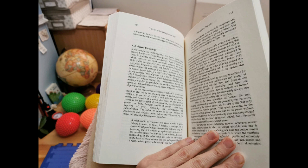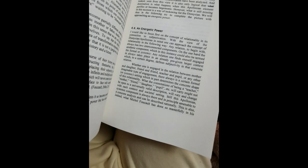Indeed seen from this view, it is also only logical that domination is what happens when this Apollonian element purifies or becomes hegemonic. However, what is still missing in this account is a way of reckoning with the Dionysian. We will thus, in the following, try to complete the picture with approaching an energetic power. 4.4. I would like to focus first on the concept of relationality and its connection to subjectivation. With the view of the Dionysian-Apollonian in mind, one can approach the concept of relationality in the following way. Any relation, to begin with, always has two interconnected components. On the one hand, the aesthetic component, which in this instance could also be termed the formal or systemic.